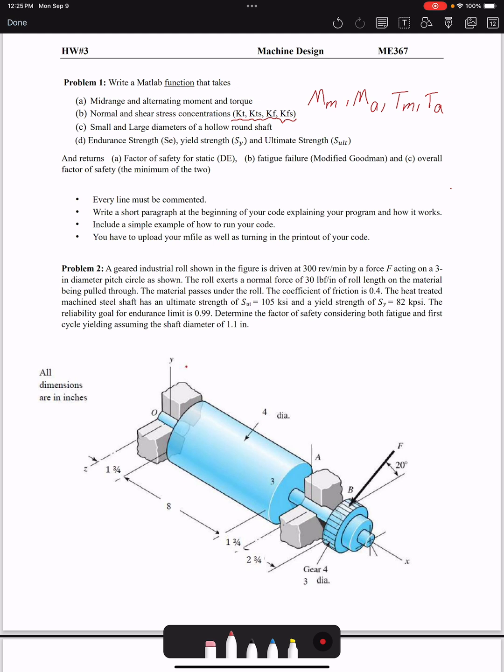Then we need to take small and large diameters of a hollow round shaft. So this MATLAB code would be compatible with hollow shaft, not solid shaft, which is a more general case. In case the inner diameter is zero, then you're going to have a solid shaft.